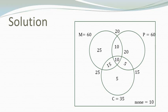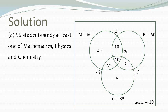Now once we have found the values we can see which options are correct. Looking at the first option it says 95 students study at least one of math, physics and chemistry. Now that is not correct, because the number of students who study at least one of these three subjects is actually 90. So we say that this is false.